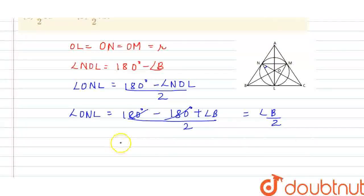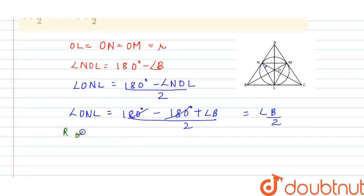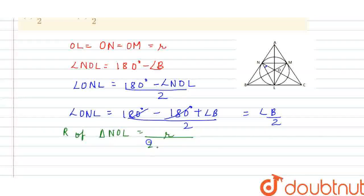Now, proceeding further, what I am doing here is that R of triangle NOL, that is equal to R upon 2 sine angle ONL. ONL is basically this angle, that is angle B by 2. So, therefore, if this is the case for triangle NOL...